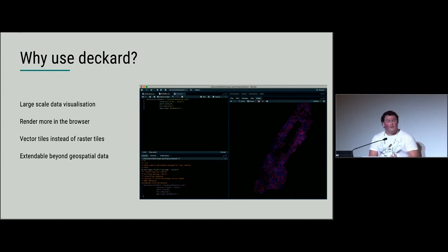Vector tiles instead of raster tiles, which we already touched on. All the stuff in Deckard is using vector tiles. And also, finally, it's extendable beyond geospatial data. You might be able to use something like 3.js or Plotly for some large-scale visualizations, and they will use WebGL as well, but I think some of the things within DeckGL make it a lot easier to construct really nice visualizations and a bit more freedom.